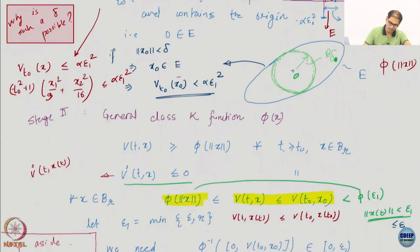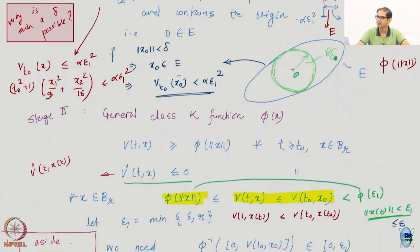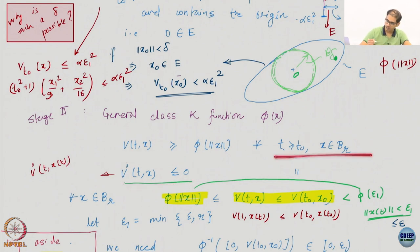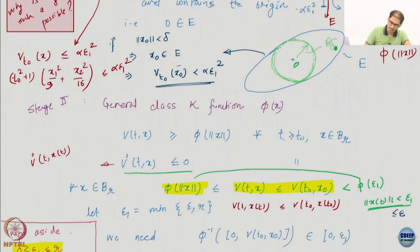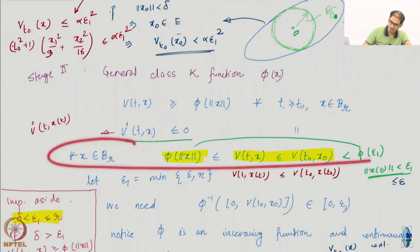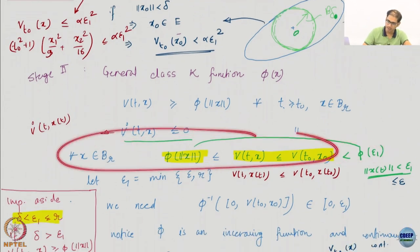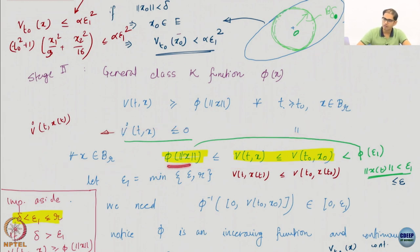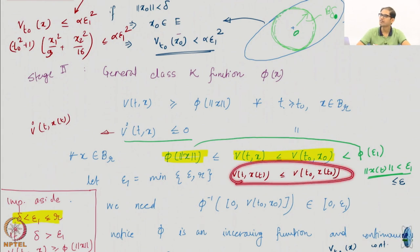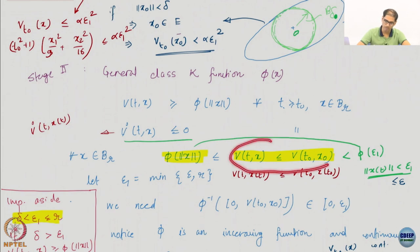I restate everything. I have V(t,x) ≥ φ(‖x‖) for all t ≥ 0, for all x in B_R. I also have V̇ to be negative semi-definite again under these assumptions. I write the same kind of statement: there is a lower bound φ(‖x‖) and then I have an upper bound from my semi-definiteness condition.